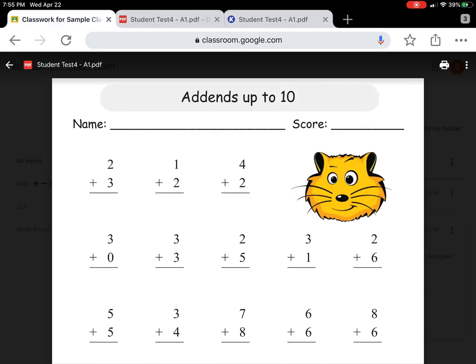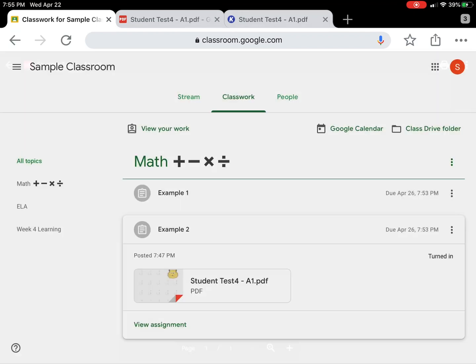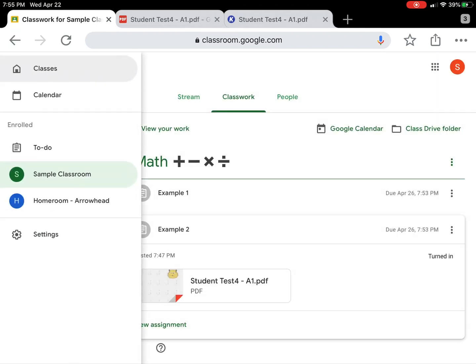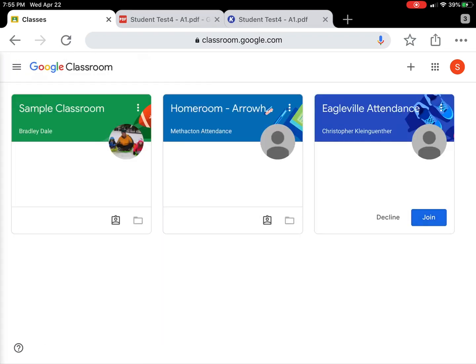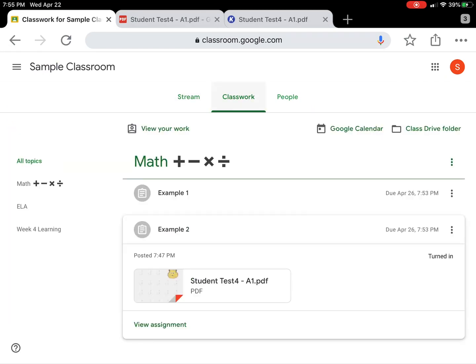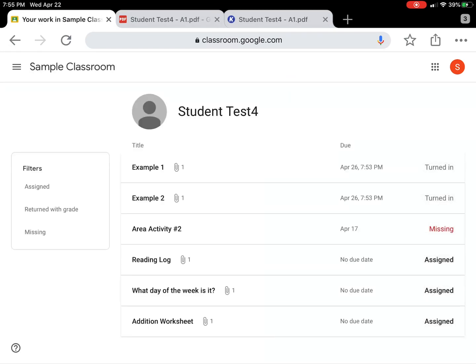You can then go back in the upper left. I'm going to go back arrow and you can see that it has been turned in. If you really want to double check to make sure everything's been turned in, you can go into classes and see there's nothing for you to work on anymore. You can always select view your work right here as well and see that it has been turned in.